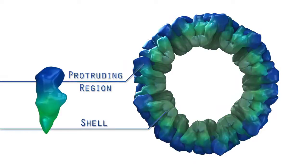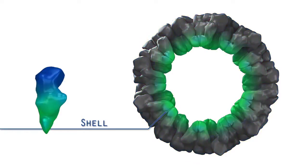The shell, also referred to as S, is the structural core of the virus that surrounds the genome. It consists of the combined shell domains of all the monomers.